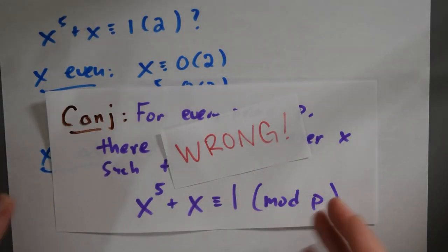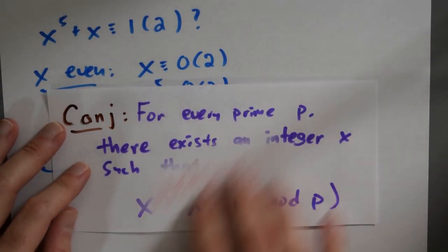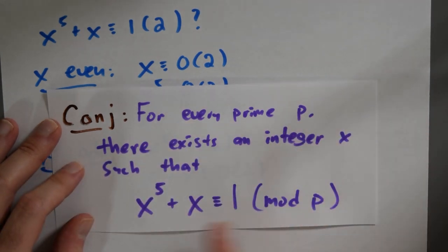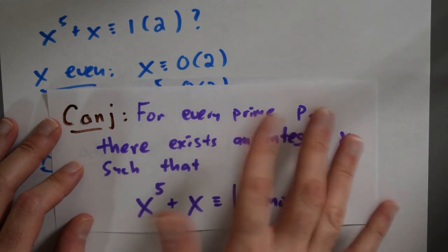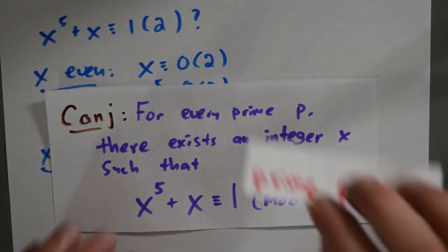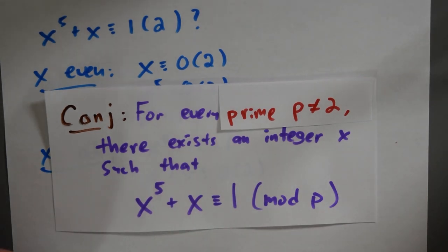Well, this conjecture as stated is wrong, right? I mean, we noticed that when P was two, this wasn't true because there isn't an integer X so that X to the fifth plus X is one mod two. But what I mean by salvage is that I want to fix this conjecture now in light of that counter example to something that might actually be true. So I'll just fix it this way. I'll avoid the counter example by adding an extra hypothesis that avoids the situation that we knew was false.